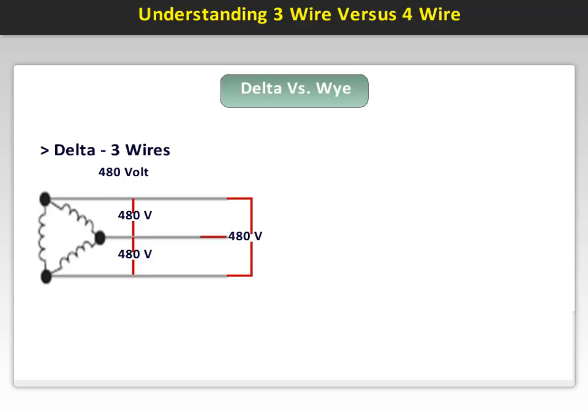While the voltage across A, B, and C would be equal to 480 volts three-phase.